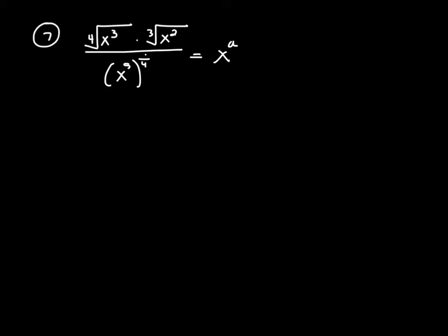Here, they want us to use our exponent rules to figure out what 'a' would be equal to. We're looking to condense this into x to some power, and then whatever that power is will be equivalent to a. Just so we can see how exponents correlate to radicals...